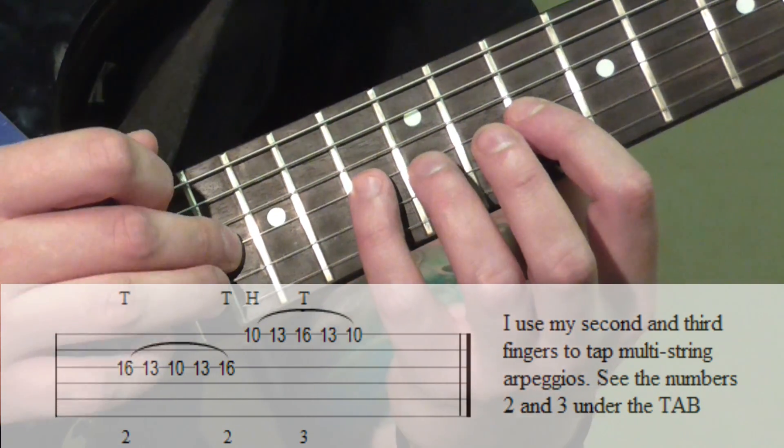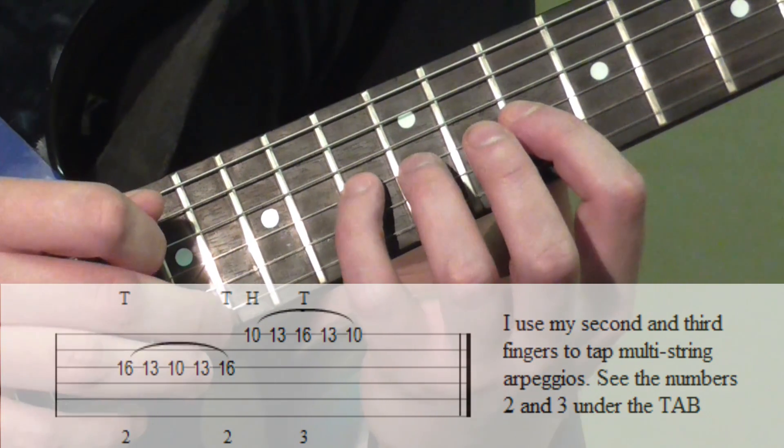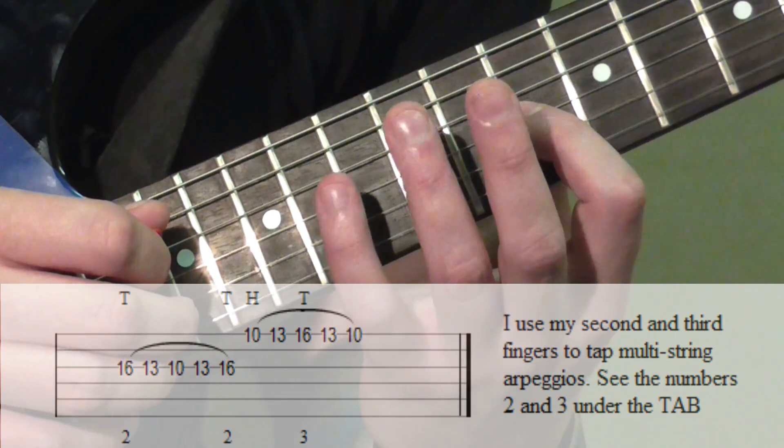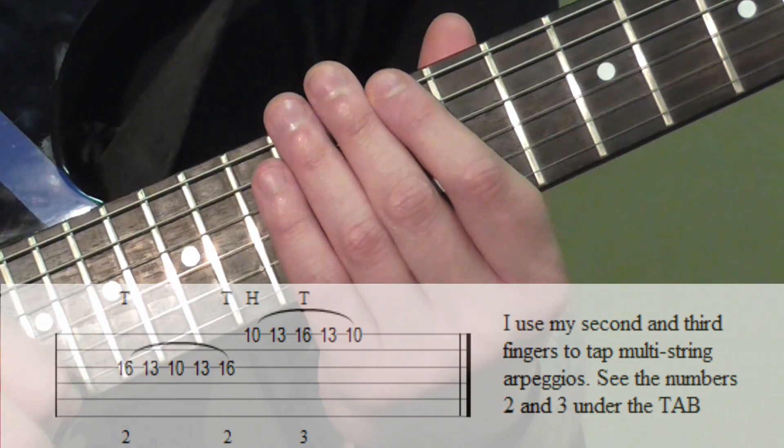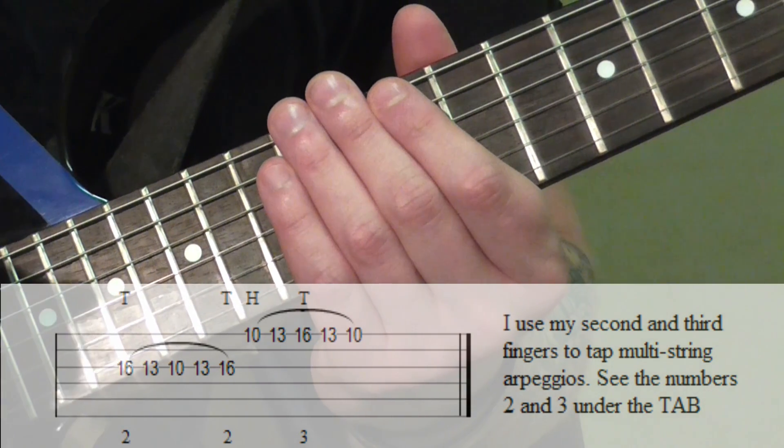Pull off to the 13th and pull off to the 10th. And there is your two-string diminished tapped arpeggio.